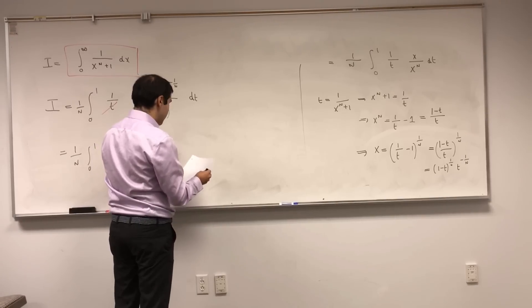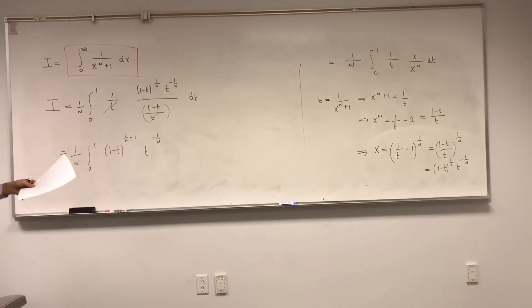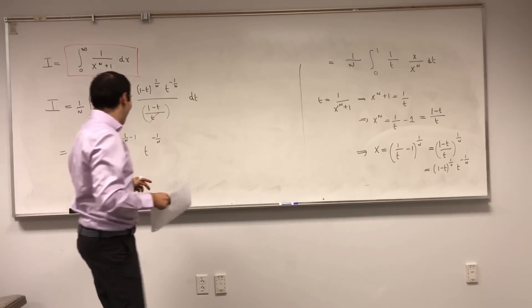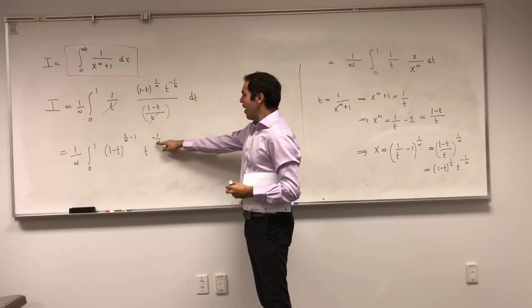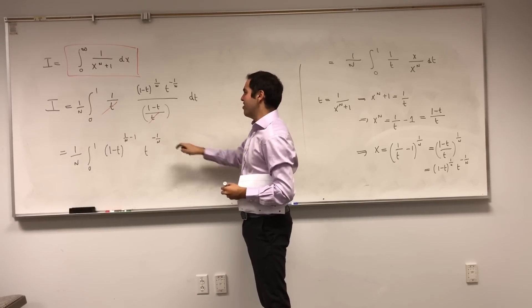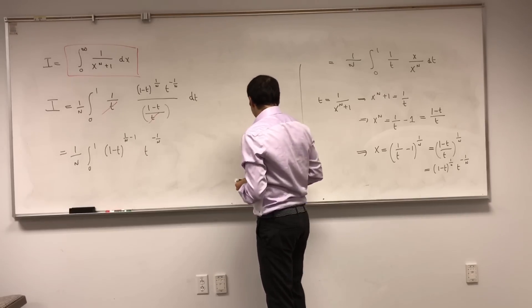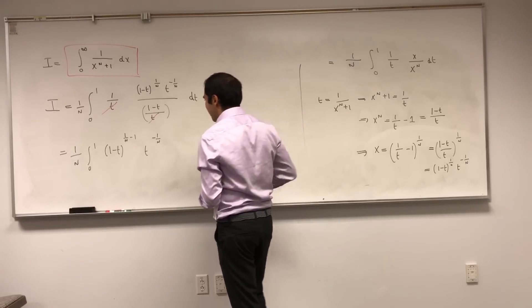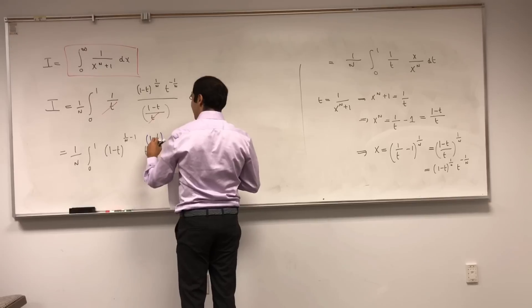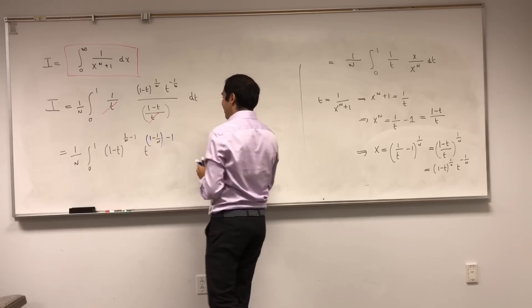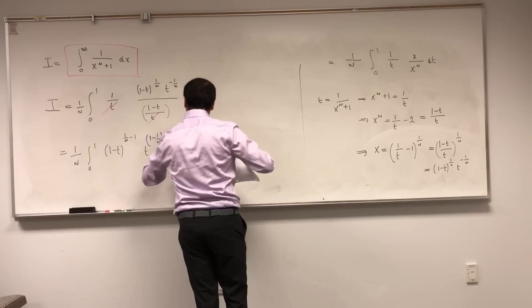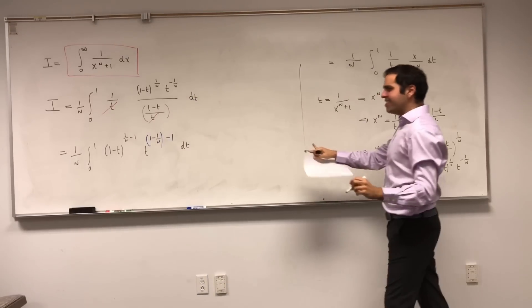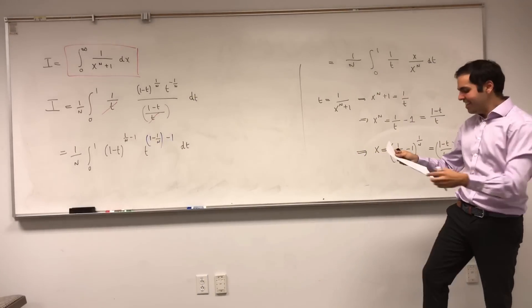But here's a little trick, and it becomes very clear in a second why. Here it's nice, we have something minus 1, we also want there to be here something minus 1. But no problem, just add and subtract 1, so 1 minus 1 over n minus 1 dt.